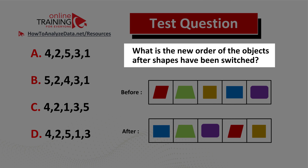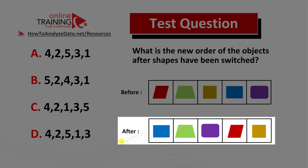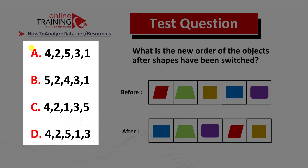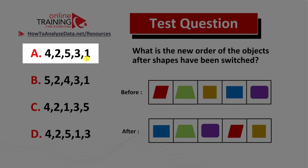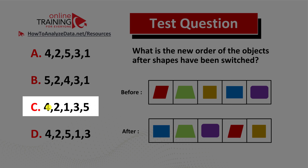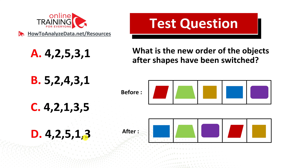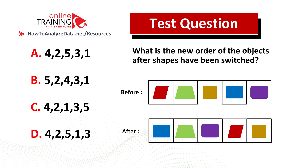Let's look at an interesting question which you should be able to solve in under 30 seconds. What is the new order of the objects after shapes have been switched? You have a before order and an after order, with four different possible answers: choice A four two five three one, choice B five two four three one, choice C four two one three five, and choice D four two five one three. Try to pause this video to come up with the solution on your own — typically in the test you have no more than 30 seconds to answer these types of questions.